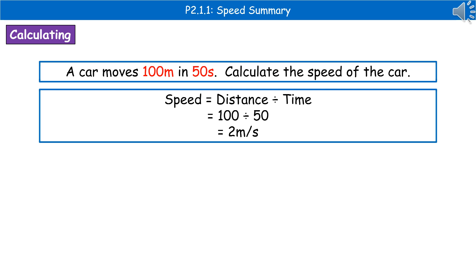Then we need to write down the formula we're going to use, which is speed equals distance divided by time. Substitute in our values: 100 divided by 50, and then plug that into your calculator to give you your answer of 2 meters per second.